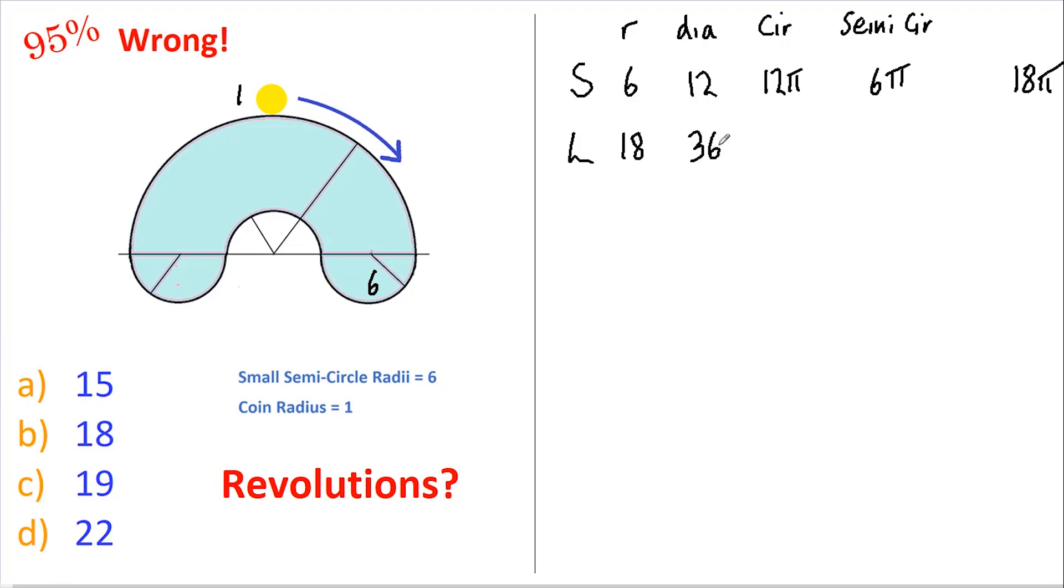The large semicircle at the top has a radius of 18, it has a diameter of 36, a circumference of 36π, and a semi-circumference of 18π, for a total of 18π. The coin has a radius of 1, a diameter of 2, and a circumference of 2π. We are not interested in the semi-circumference of the coin.